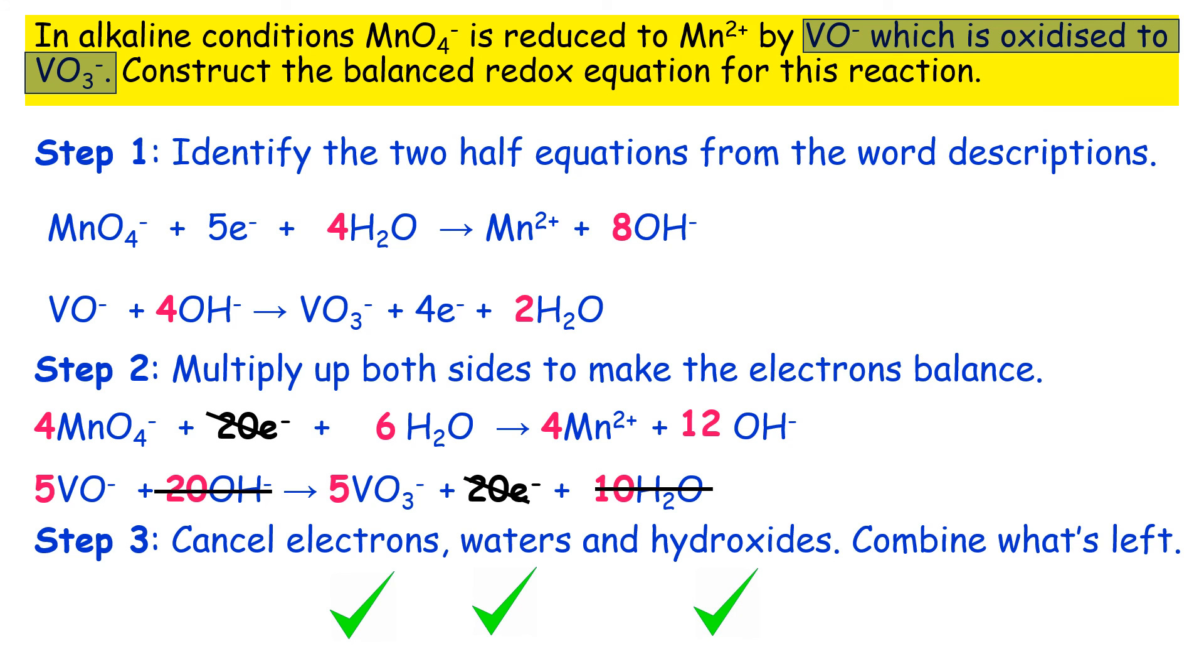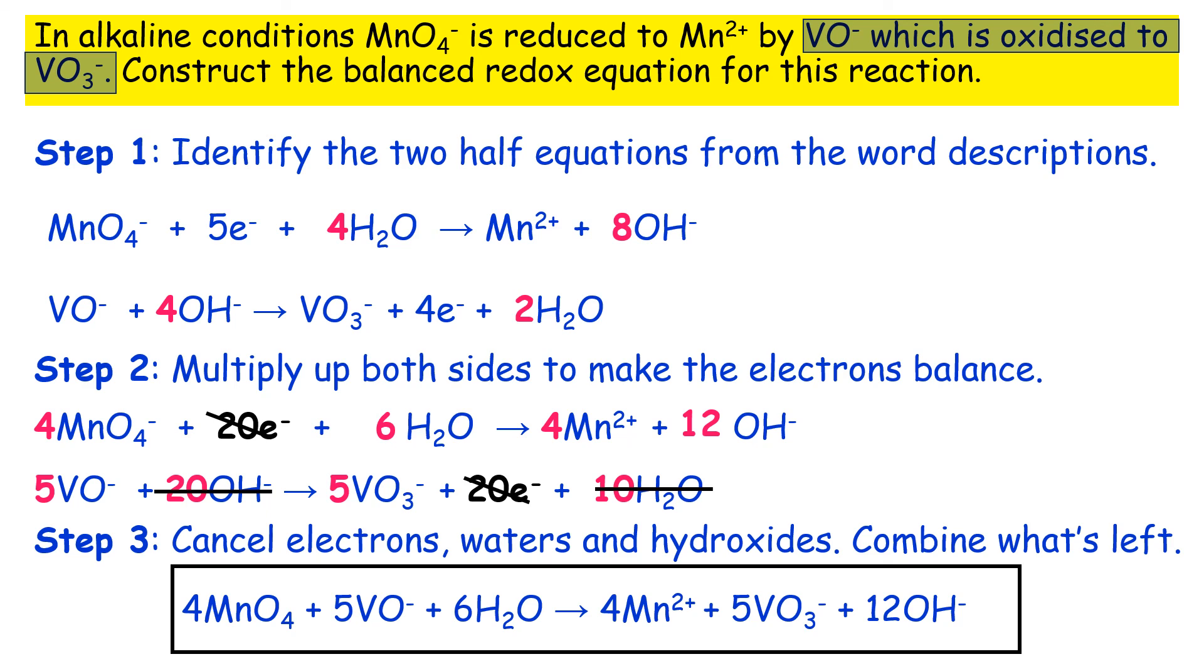So now you can combine what's left which gives you 4MnO4- plus 5VO- plus 6H2O giving 4Mn2+ plus 5VO3- plus 12OH-. Okay hopefully this has been a useful look at a quite challenging example. Thanks for listening as always. Until next time, see you soon.